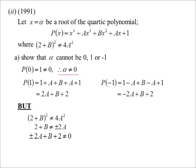Ah, so 2A plus B plus 2 can't equal 0. And minus 2A plus B plus 2 can't equal 0. So, therefore, 1 and minus 1 can't be solutions.